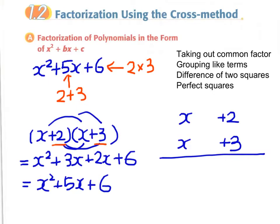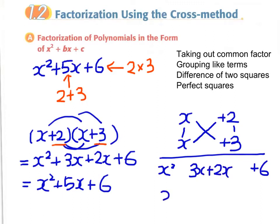In the vertical format, x times x gives x squared, and 2 times 3 gives plus 6. The middle term comes from x times 3 plus 2 times x, which is 3x plus 2x, giving x squared plus 5x plus 6. Notice that the middle term involves a crossover multiplication — there is a crossover here.